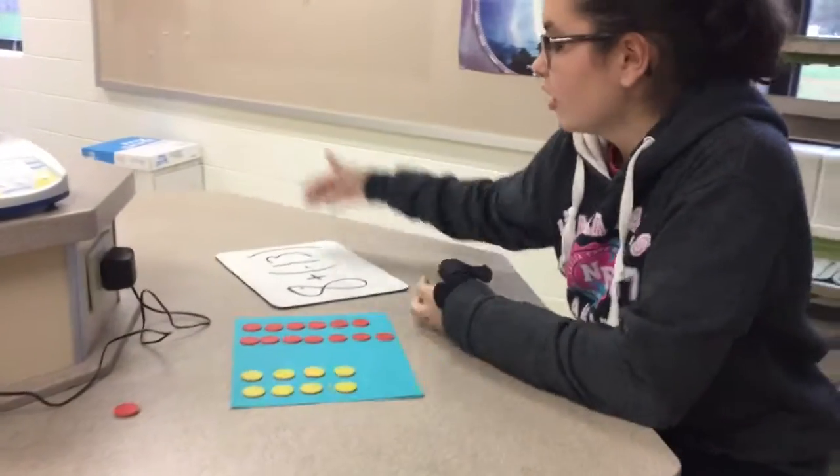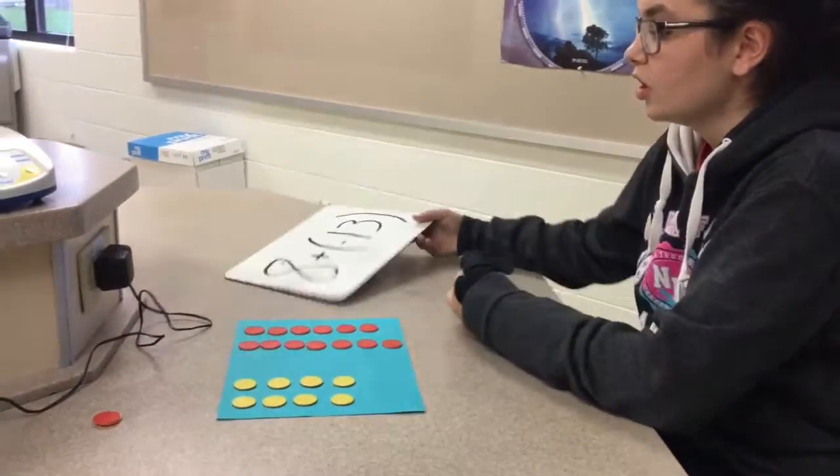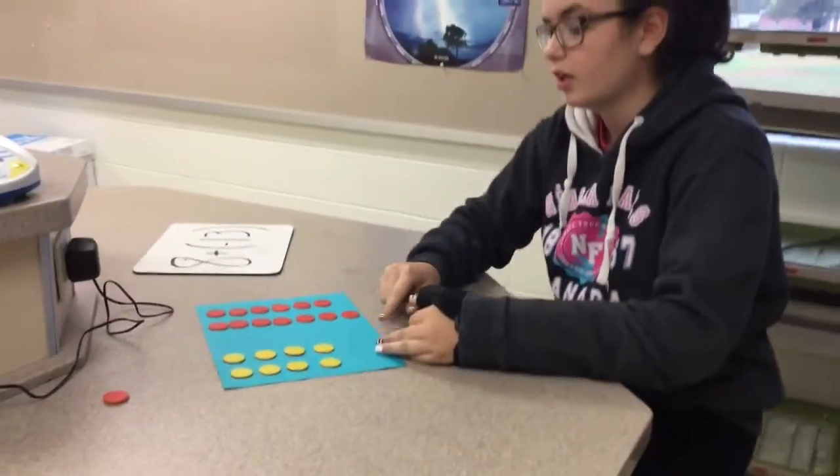So to start off with, we'll start off with addition. Our problem is 8 plus negative 13. So we have our positive 8 and our negative 13.